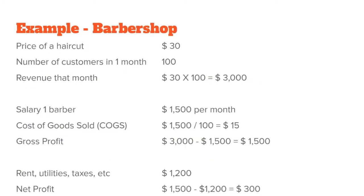That was a long explanation of cash and cash burn, but I really want you to understand these two metrics because cash is basically the blood — the heartbeat — of your business. Moving on to things a lot more people are familiar with: price, revenue, cost, and profit. For our example we'll use a barbershop and keep it very simple.